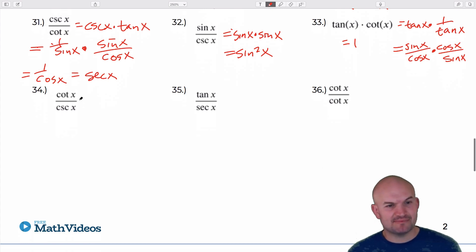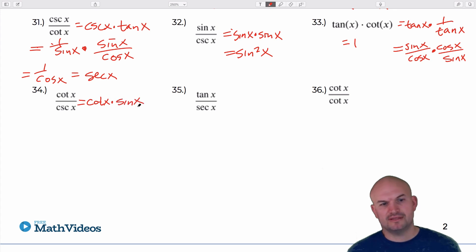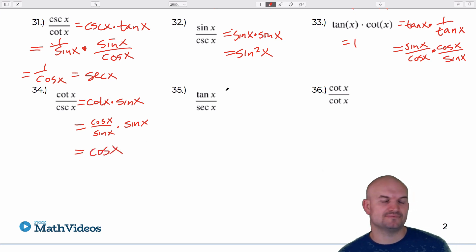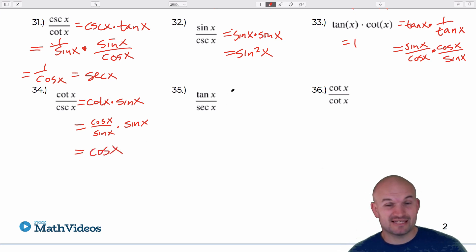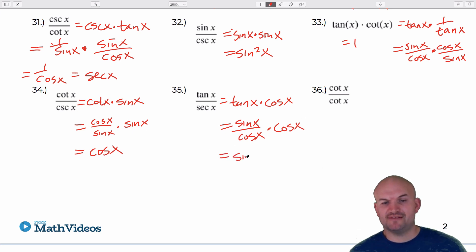Dividing by cosecant is the same as multiplying by sine. So write that as cotangent of x times sine of x. Cotangent is cosine of x over sine of x, times sine of x — that just leaves cosine of x. Dividing by secant is the same as multiplying by cosine: tangent of x times cosine of x is sine over cosine, times cosine — the cosines divide out, leaving sine of x.